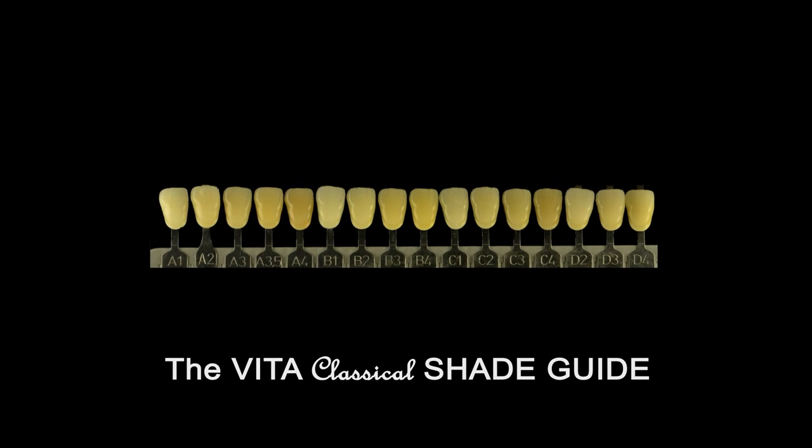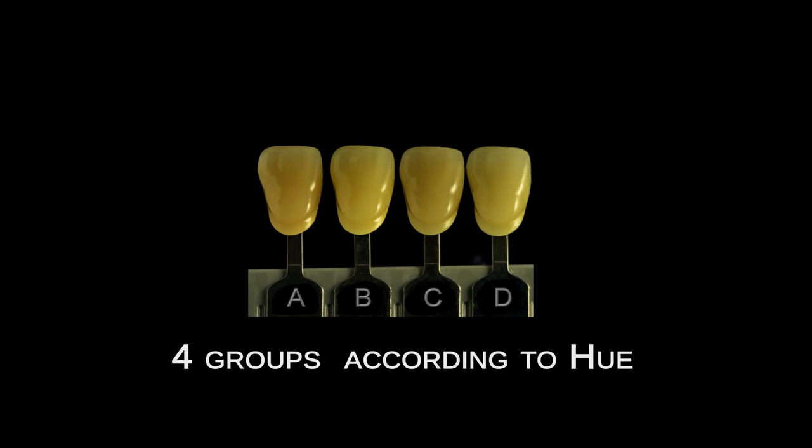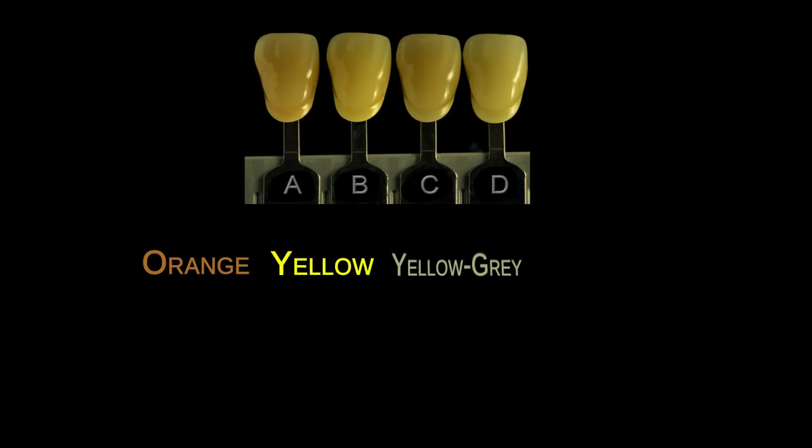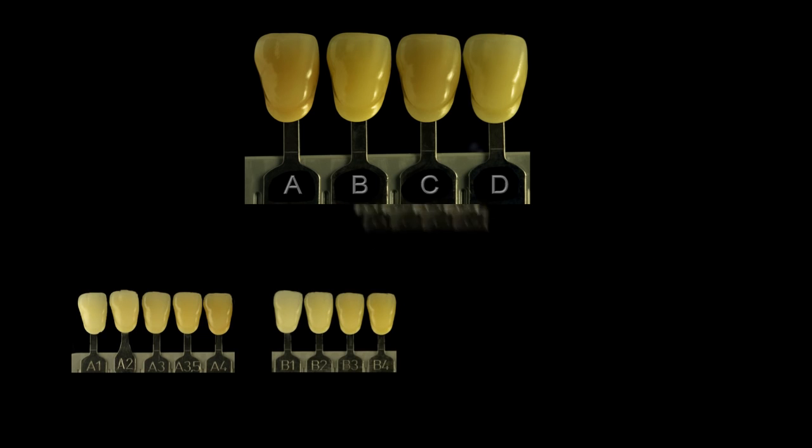The Vita Classical Shade Guide is arranged alphabetically into four groups according to hue. Orange, yellow, yellow-gray, and brown-gray.